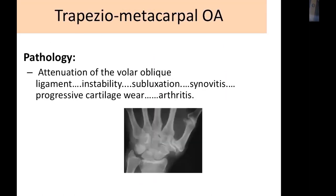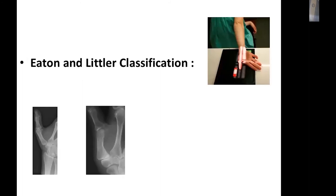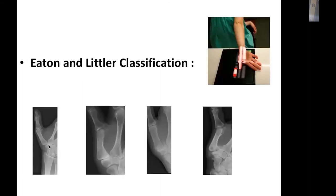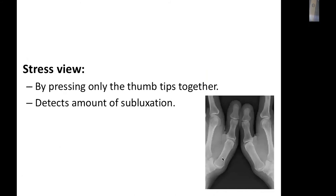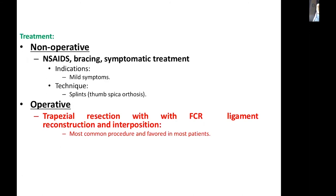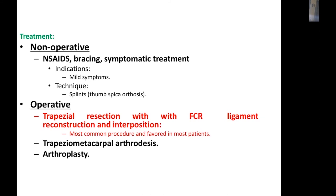Trapeziometacarpal osteoarthritis results from attritional changes in the supporting ligaments, causing pain at the base of the thumb and radial side of the wrist. On X-ray, the Eaton classification ranges from stage 1 (no changes) to stage 2 (minor osteophytes, joint narrowing), stage 3 (osteophytes larger than 2 mm), and stage 3/4 affecting the STT ligament. Conservative treatment includes splinting, bracing, and injections. Surgical treatment of choice is trapezial resection with FCR ligament reconstruction and interposition graft; trapezio-metacarpal arthrodesis and arthroplasty are also options.